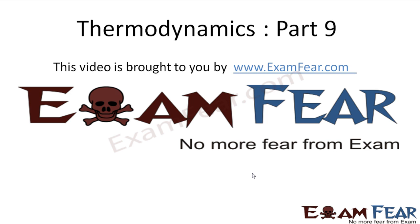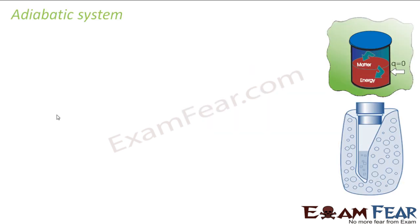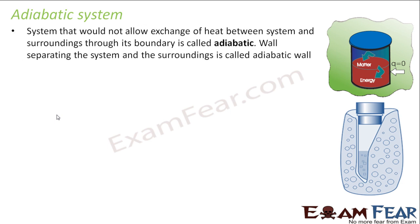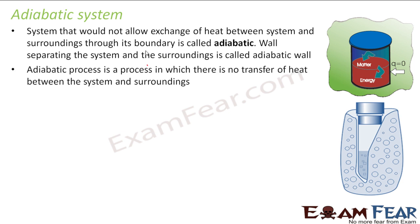This video on thermodynamics talks about the adiabatic system. As I already told, an adiabatic wall is a wall through which you can't transfer heat, energy, or matter between the surrounding and the system. So, an adiabatic system is nothing but a closed system which does not allow the exchange of heat between the system and the surrounding. This boundary is called adiabatic, and an adiabatic process is a process where there is no transfer of heat between the system and the surrounding.